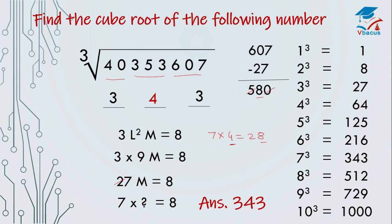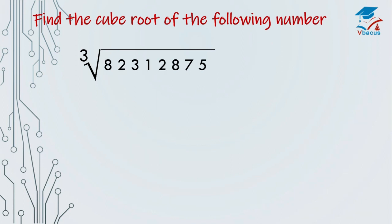So your answer will become 343. Cube root of 40353607 is 343. You can check in the calculator.